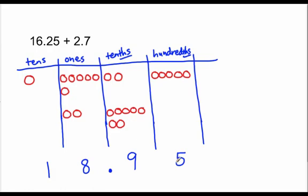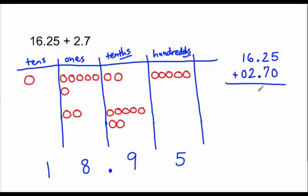That is the picture way to understand the idea. When setting it up vertically with the algorithm, we make sure that we're adding the same units. You might have heard in the past: make sure the decimal points line up. There's a reason for that — you can only add or subtract the same units. This two is in the ones place, so it goes right below the six, and every other number falls in place. Five plus zero is five; two plus seven tenths is nine tenths; six plus two ones is eight ones; and one ten plus no tens is one ten. We get the same answer: eighteen and ninety-five hundredths.